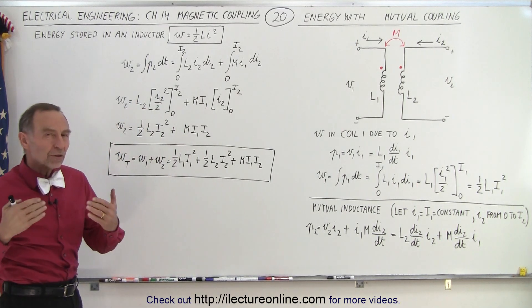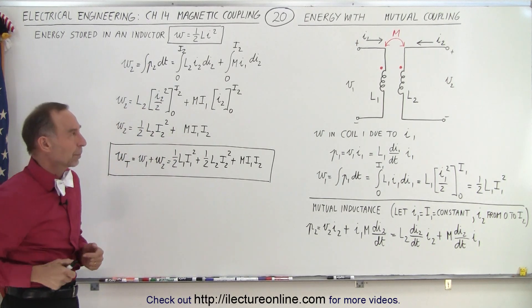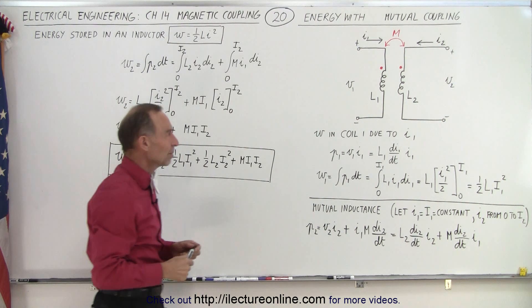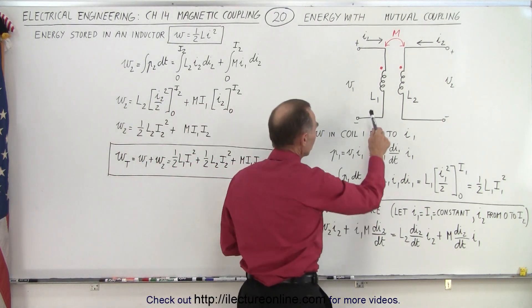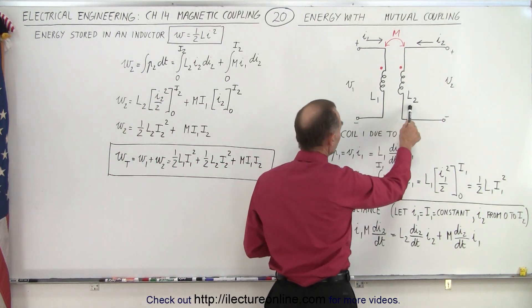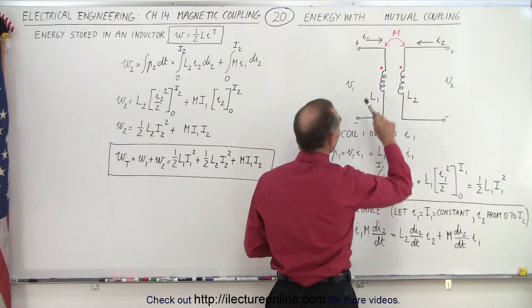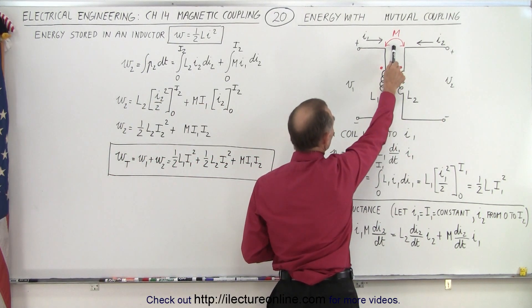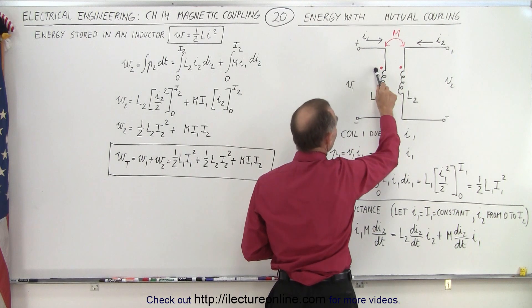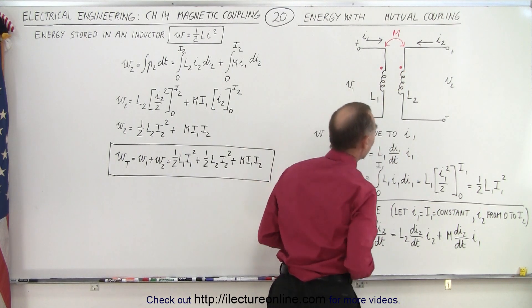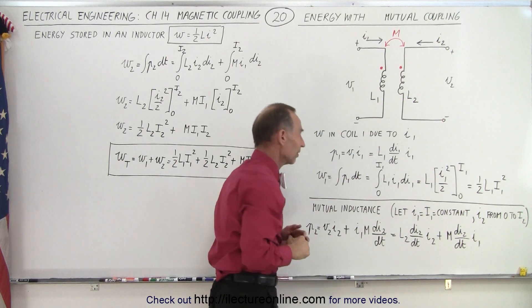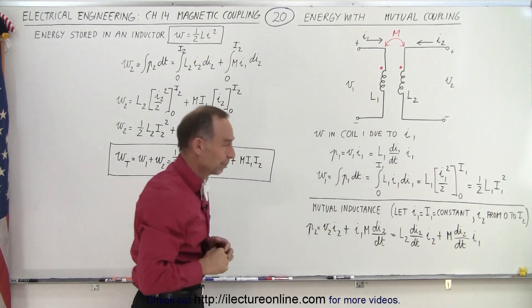But what do we do when there's mutual coupling? Here we have a simple example of mutual coupling between two inductors L1 and L2. Notice the mutual inductance is M, and notice that the current enters on both inductors on the dot side of the inductor.